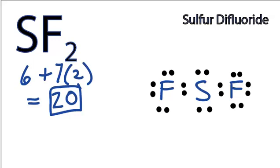If we check the formal charges, we'll see that they're all zero, so this is going to be the best structure for SF2.